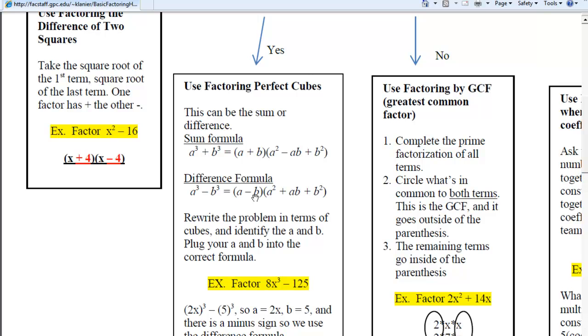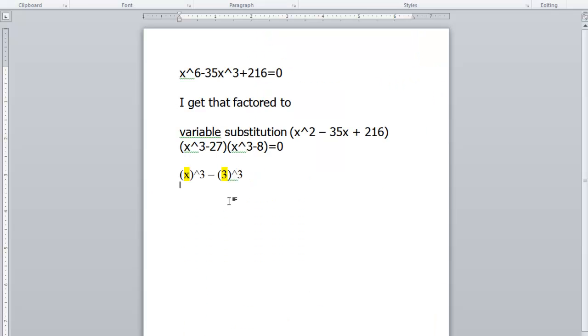So it's a minus b, whatever the first term is that was cubed, minus b, whatever the second term is that got cubed. Then it's a squared plus ab plus b squared. So for us, in this particular problem,